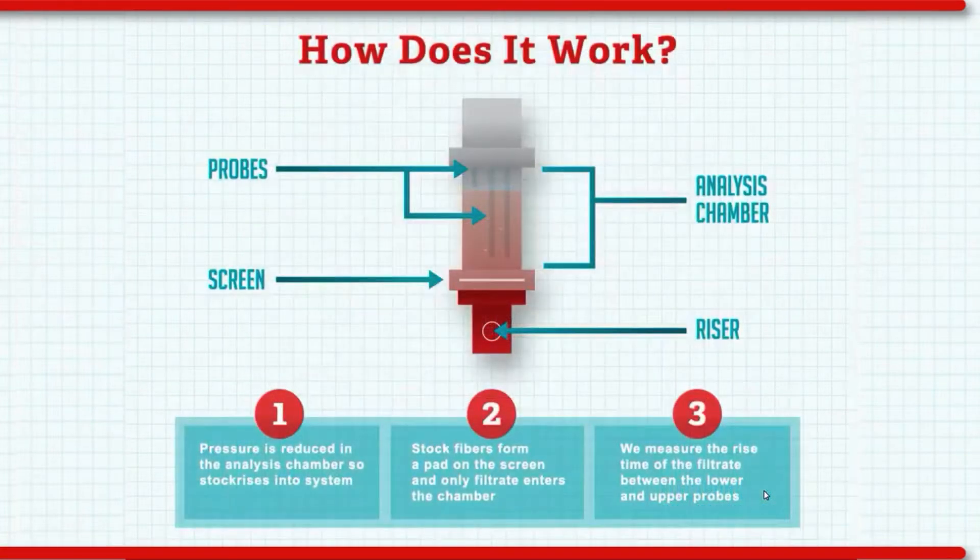Unlike other analyzers, Draenec doesn't try to automate the TAPI 227 CSF methodology. Instead, we use a proprietary technique that allows us to complete an analysis in as little as 12 seconds. We start by creating a pressure differential in the analysis chamber which forces stock up into the riser. That stock hits a screen which forms a fiber pad and then only filtrate enters the analysis chamber.